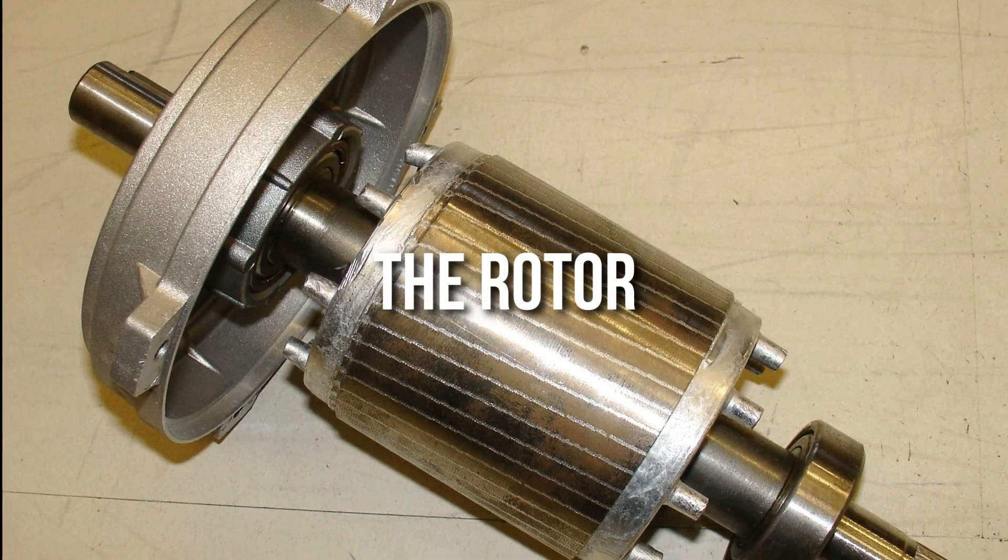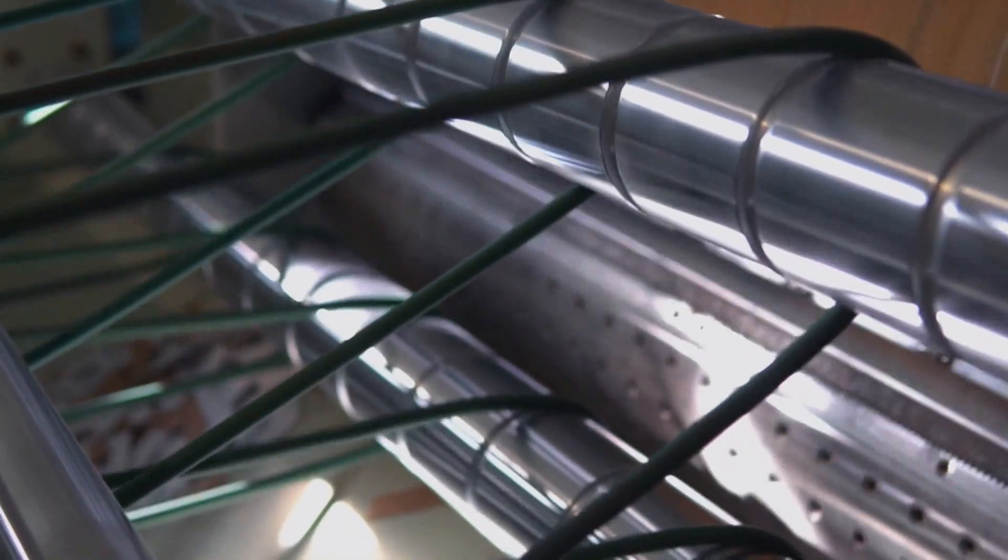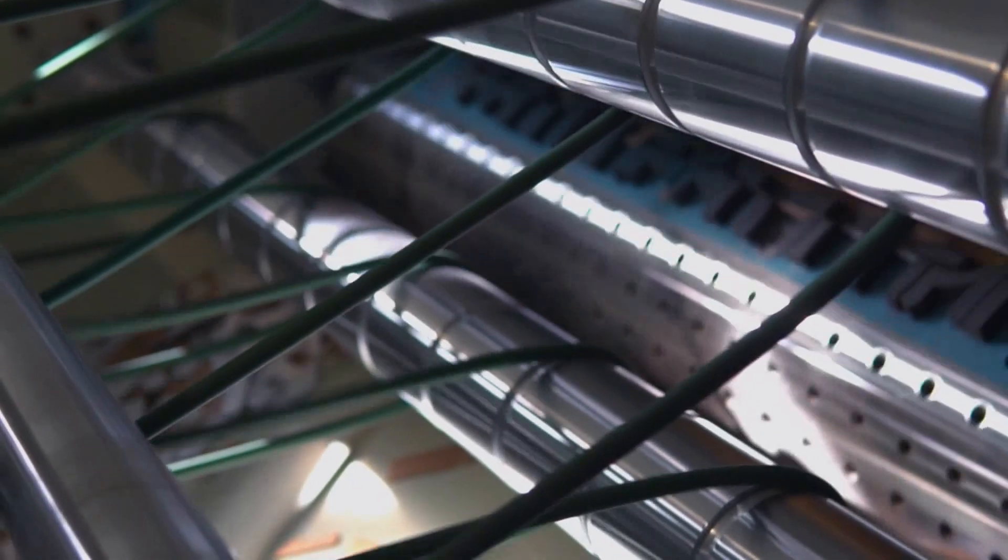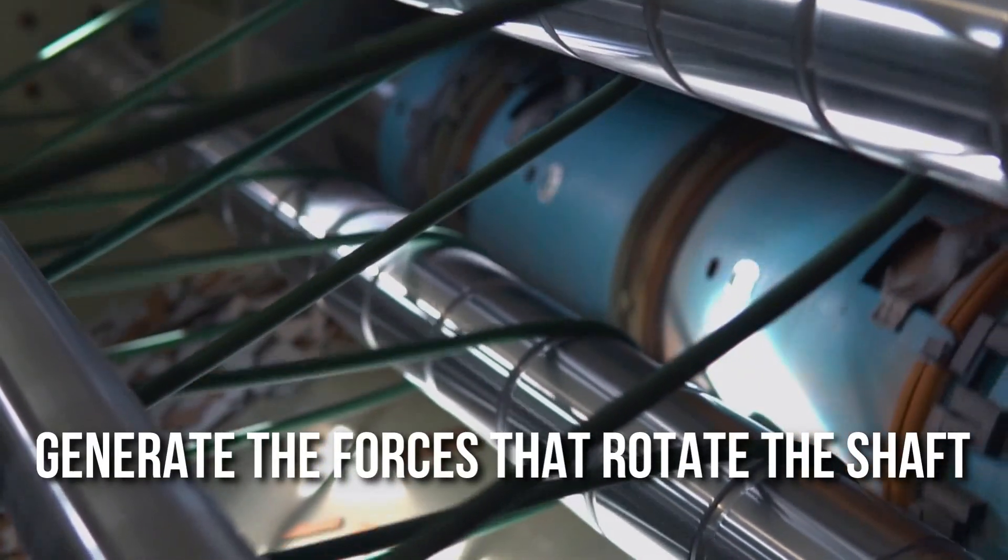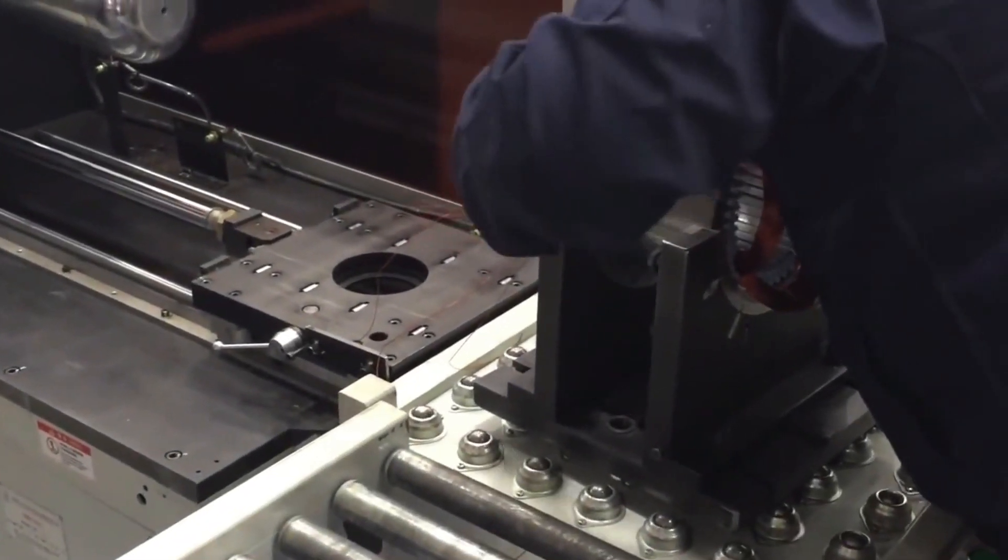The rotor. Talking about the same, the rotor is the moving part of the electric motor. Rotate the shaft that supplies the above mechanical power. In a typical configuration, the rotor is equipped with a conductor that carries a current that interacts with the magnetic field of the stator to generate the forces that rotate the shaft. However, some rotors carry permanent magnets and it is the stator that holds the conductor.